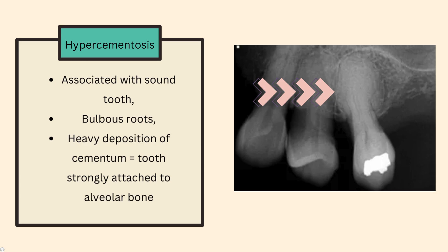What is the function of cementum? Cementum acts as a cement, attaching the tooth to the alveolar bone. So the tooth is strongly attached to the alveolar bone, which means that when planning an extraction, it is difficult to extract the tooth as one unit. It is problematic for any dentist — you can never extract a tooth with hypercementosis within 30 minutes. You need a minimum of one hour.